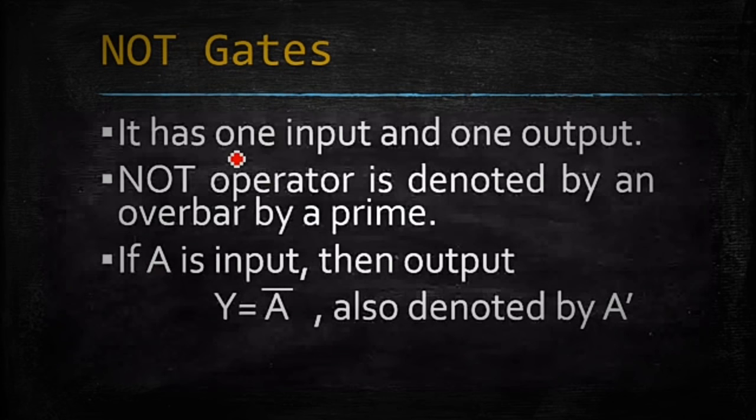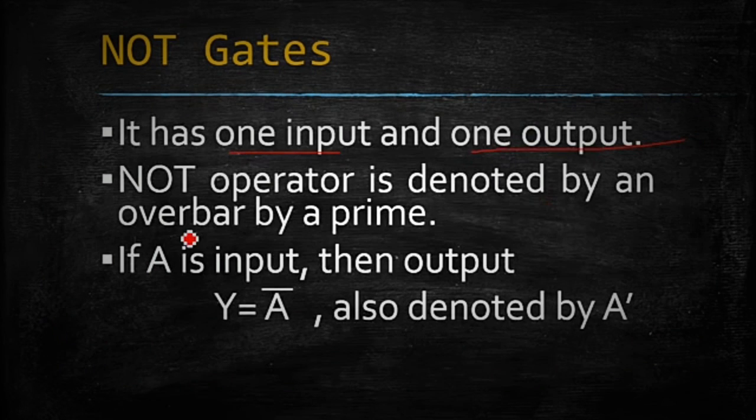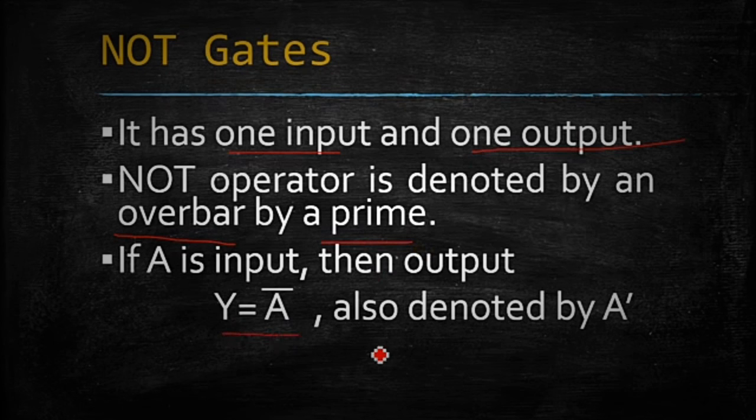NOT gate. It has only one input and one output. NOT operator is denoted by an overbar or a prime. Y equals A bar or A dash.